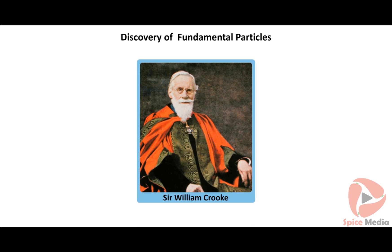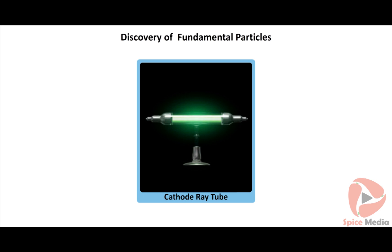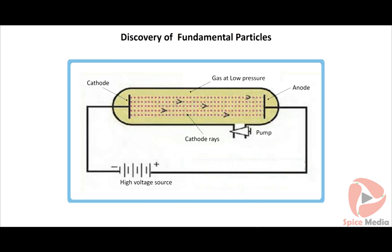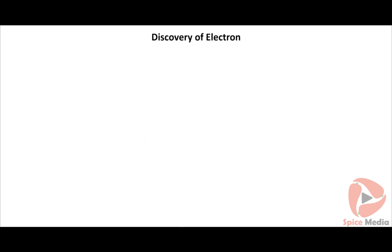In 1878, Sir William Crookes, while conducting an experiment using a discharge tube, found certain visible rays traveling between two metal electrodes — known as Crookes' rays or cathode rays. The discharge tube, now referred to as the cathode ray tube, is a long glass tube filled with gas and sealed at both ends. It consists of two metal plates acting as electrodes connected to high voltage: the negative terminal is the cathode and the positive terminal is the anode. A side tube connected to a pump lowers the pressure inside.